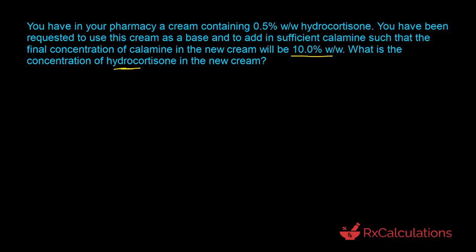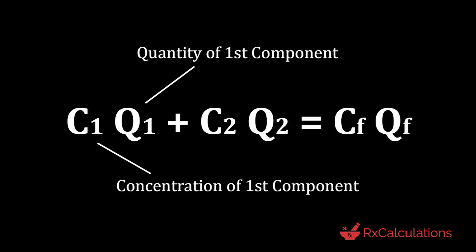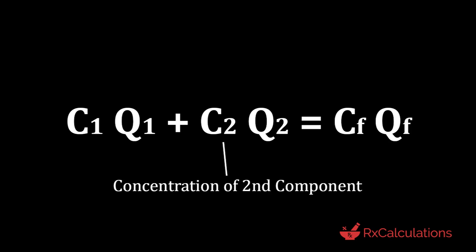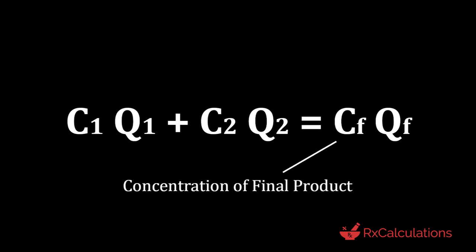We want to start off with the simplified version of the generalized algebraic equation. We have two components here — we are mixing calamine and we are mixing the 0.5% hydrocortisone to get the final concentration of 10% weight by weight calamine in the final preparation. The form of the equation we want to use is C1Q1 plus C2Q2 equals C-final times Q-final. Here C1 is the concentration of the first component, Q1 is the quantity of the first component, C2 is the concentration of the second component, Q2 is the quantity of the second component, CF is the concentration of the final product, and QF is the quantity of the final product.